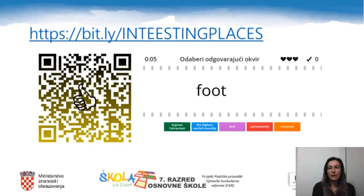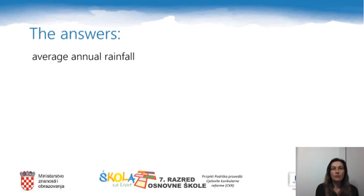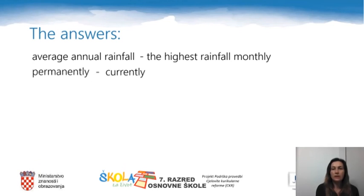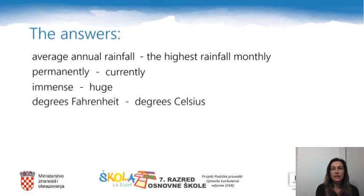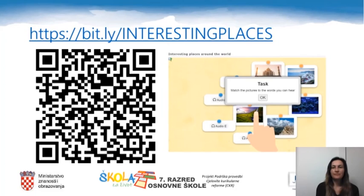Now copy the following link into your web browser or scan the QR code to match the expressions that go together. Here are the answers: average annual rainfall and highest rainfall monthly refer to the quantity of rainfall. Permanently and currently are opposites. Immense and huge mean the same. Degrees Fahrenheit and degrees Celsius refer to temperatures. Inch and foot refer to the system of measurement. Also, copy the next link or scan the QR code to match pictures to the words you can hear.